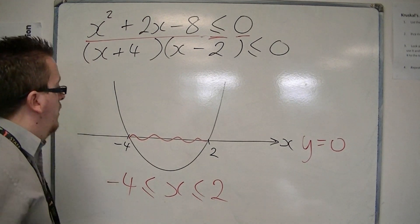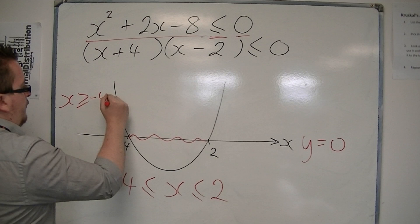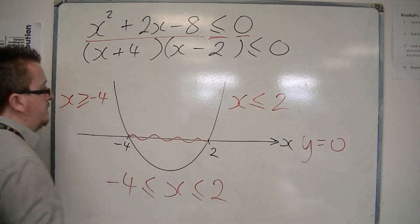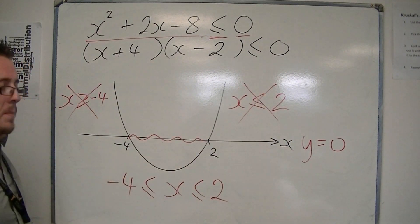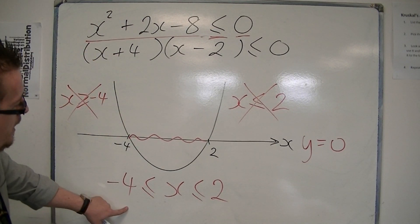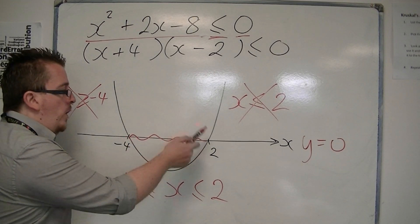Do not represent it as x is greater than or equal to minus 4 and x is less than or equal to 2. Don't do it this way. It is represented by one inequality, because it is one region.